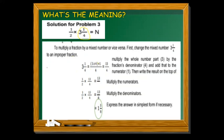To convert, multiply the whole number 3 by the denominator 4, then add the numerator 1. Three times four equals twelve, plus one equals thirteen — that becomes the new numerator, and we copy the denominator. So 3 and one-fourth becomes thirteen-over-four. Our expression is now one-half times thirteen-over-four.